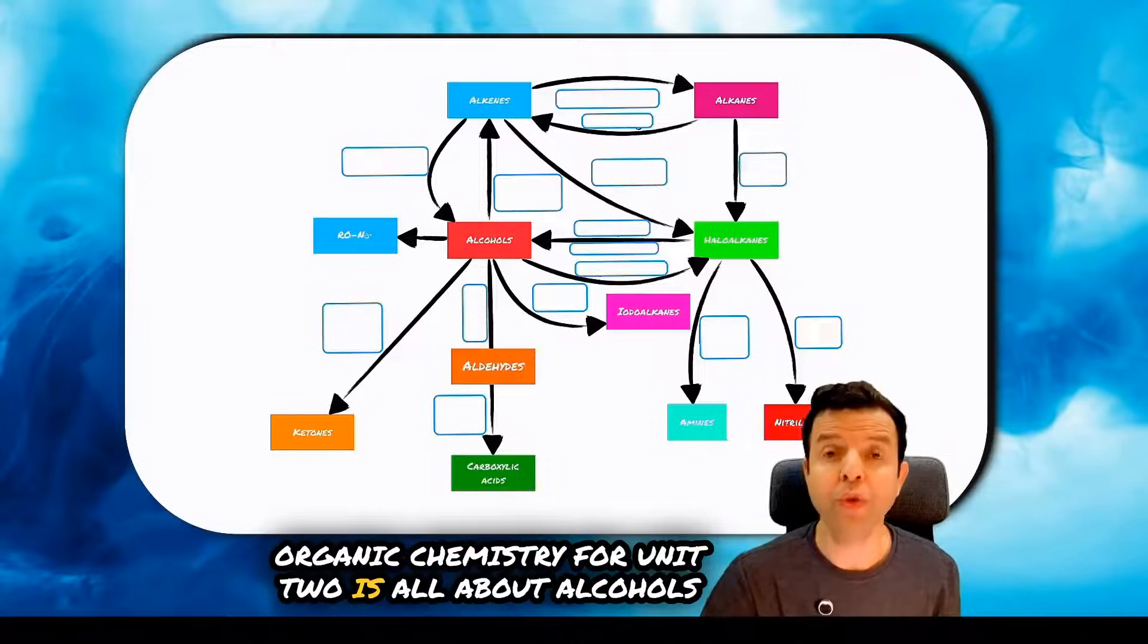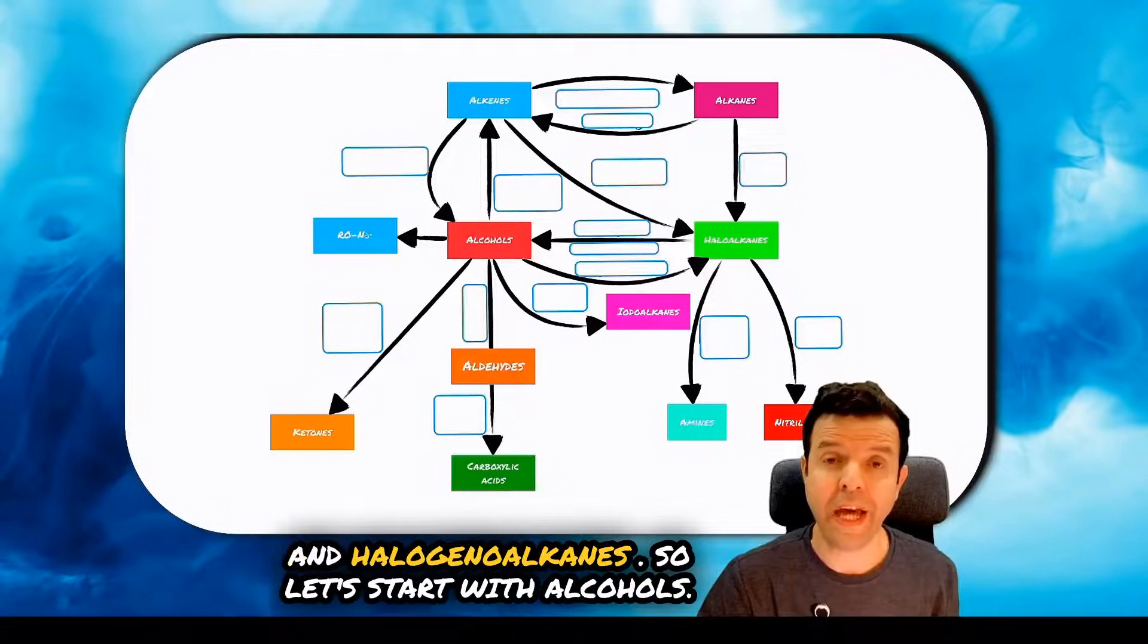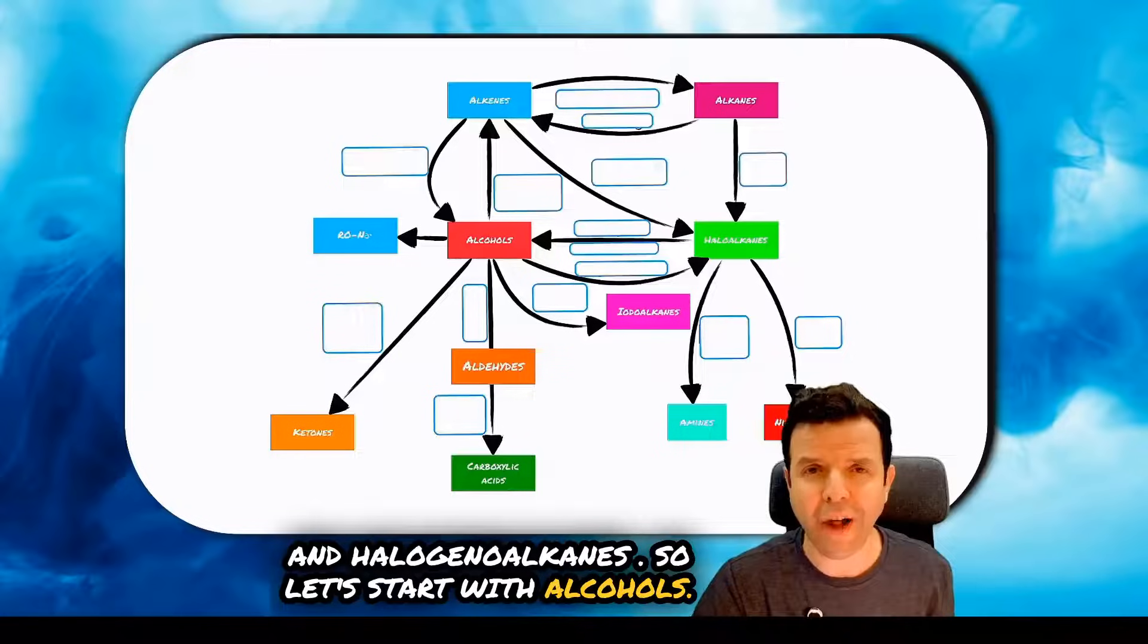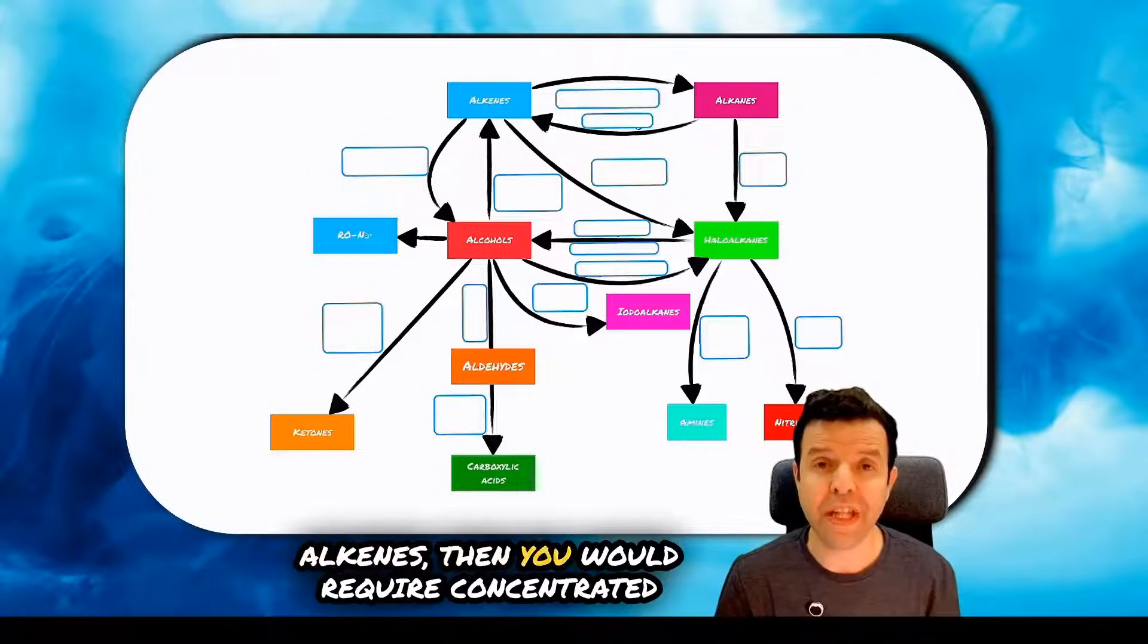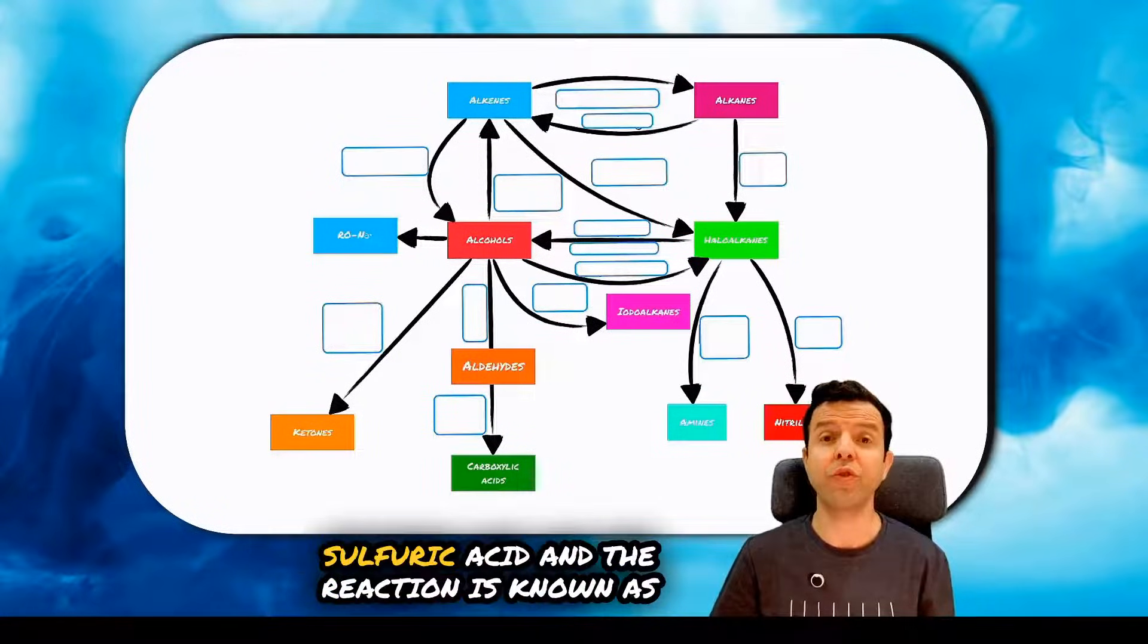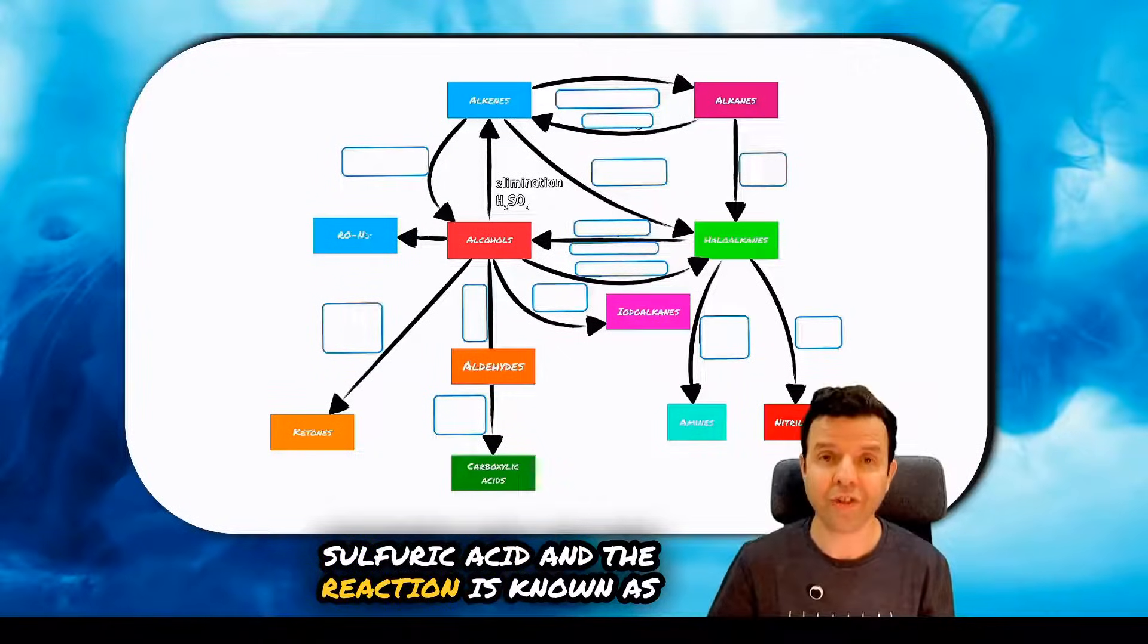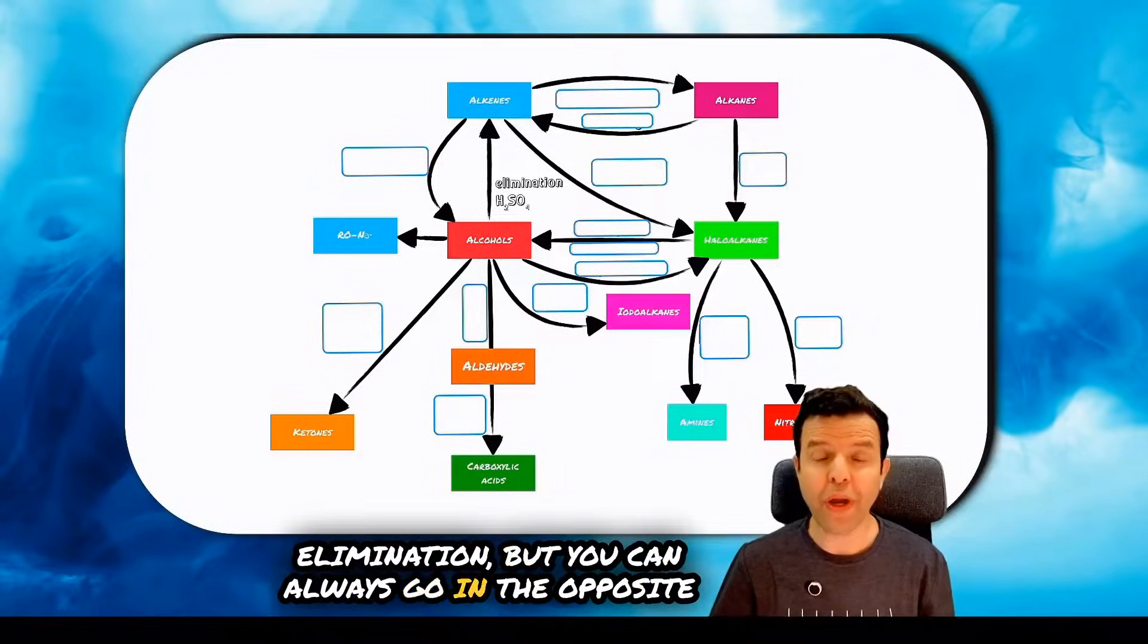Organic chemistry for unit 2 is all about alcohols and halogenoalkanes. So let's start with alcohols. First of all, if you are to turn alcohols into alkenes, then you would require concentrated sulfuric acid and the reaction is known as elimination. But you can always go in